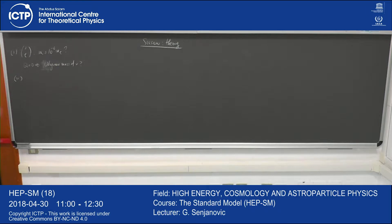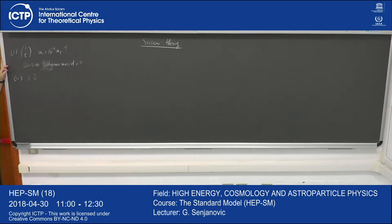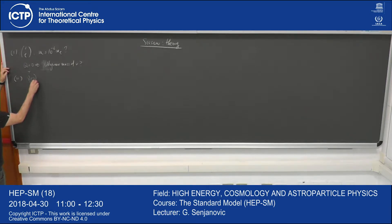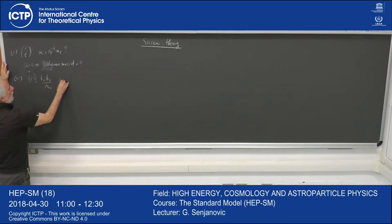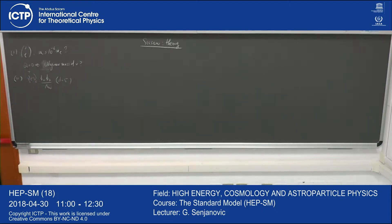Moreover, if there are no new states — if you believe that the standard model is a complete story in terms of the light physical states — then of course the neutrino comes out to be Majorana. We found that the only type of mass term we could write would involve two Higgs doublets. This is the dimension-five Weinberg operator. Of course, it doesn't tell us where it comes from; it doesn't tell us anything except that it wants to be Majorana. So that was another way of reasoning.